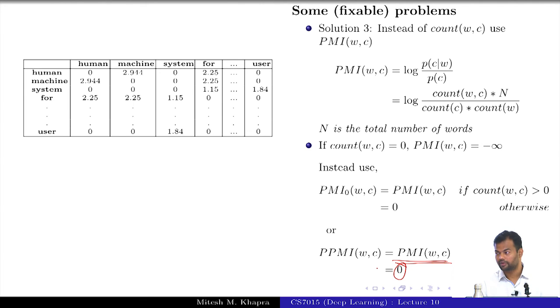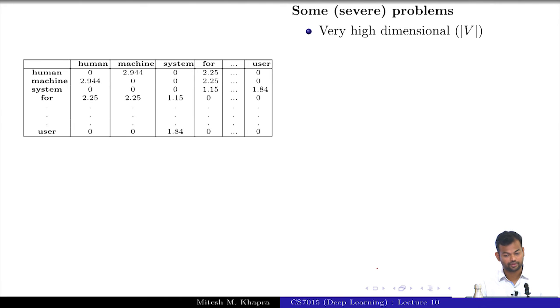What is a non-fixable severe problem with this? What is the problem with the one-hot representations? Large. What about these representations? Still large, right. Still of size V. Still very high dimensional, still very sparse, not as sparse as the one-hot encoding but still sparse, and it grows with the size of the vocabulary. Now remember that Pantry Bank had 50K words, Google 1T corpus had 13 million. It keeps going with the size of the corpus.